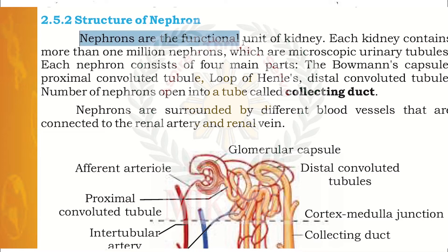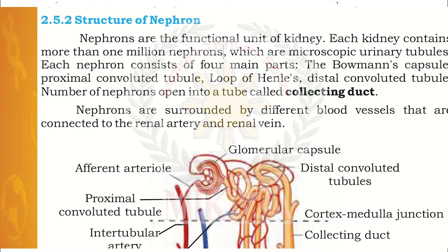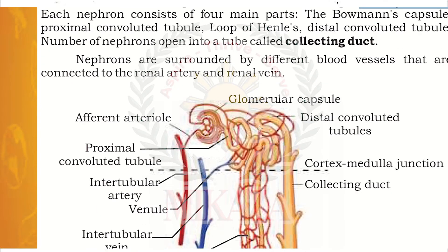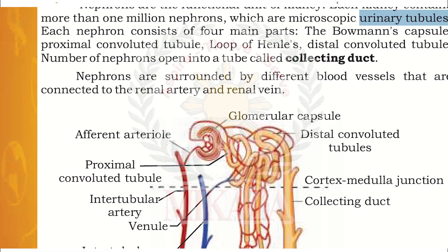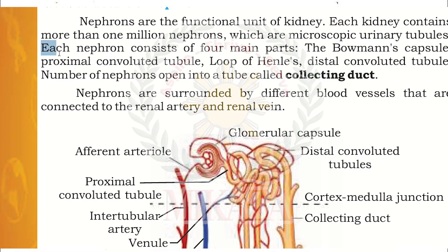Nephrons are the functional units of the kidney, and the main function of filtration is carried out by nephrons. Each kidney contains more than one million nephrons, which are microscopic urinary tubules. Each nephron consists of four main parts: the Bowman's capsule, proximal convoluted tubules, loop of Henle, and distal convoluted tubules.